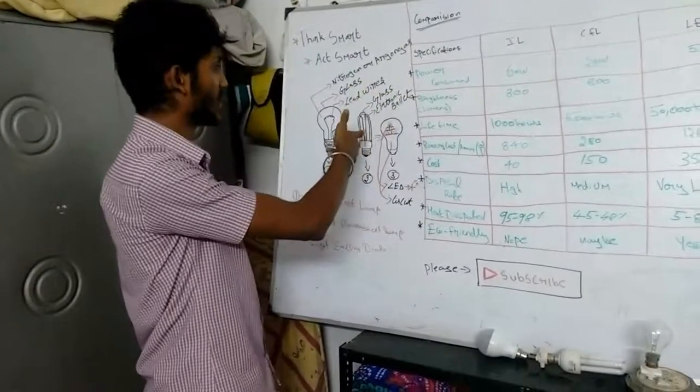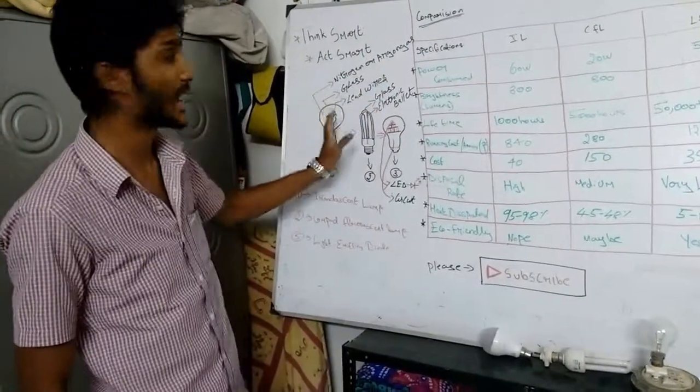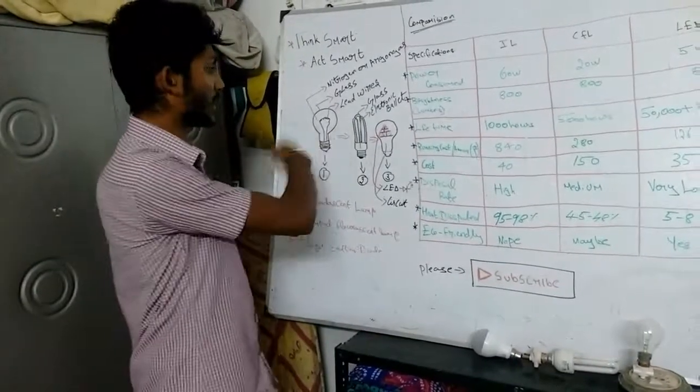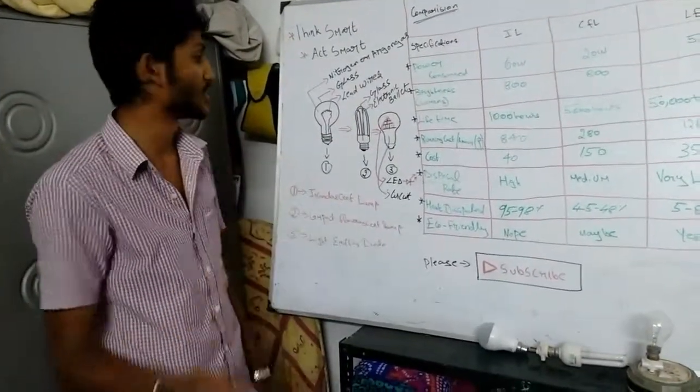And this is the CFL lamp. CFL lamp is made up of glass, electronic ballast. It also works on the same principle but some chemicals are present. In incandescent, no chemicals; in CFL, little chemicals are present.